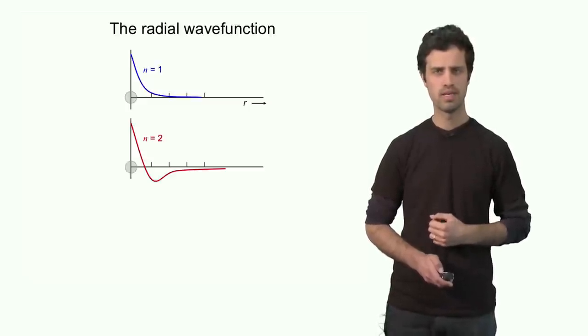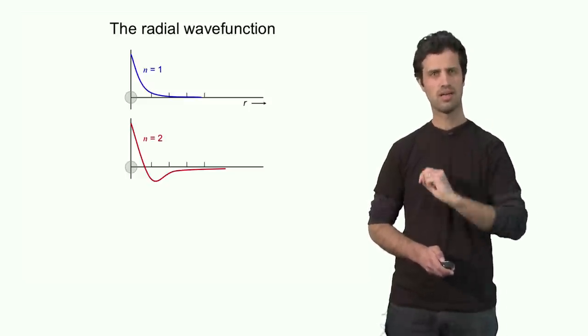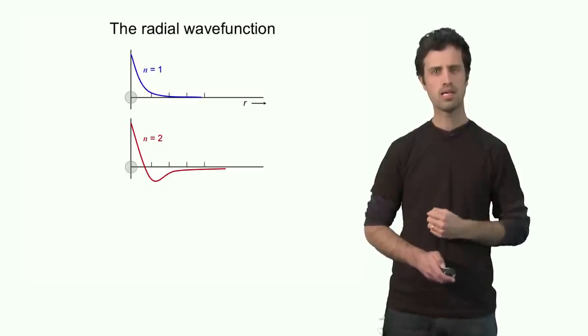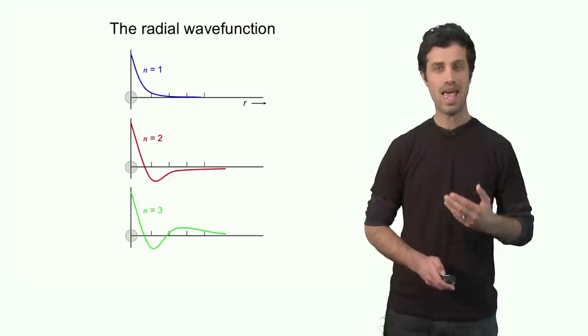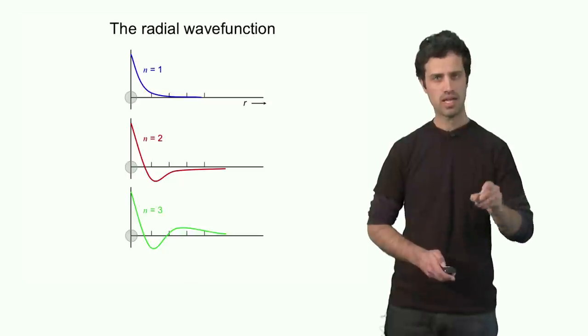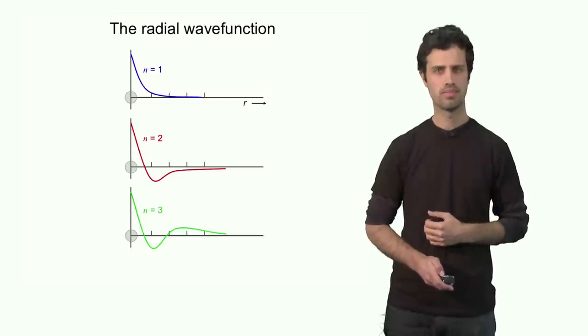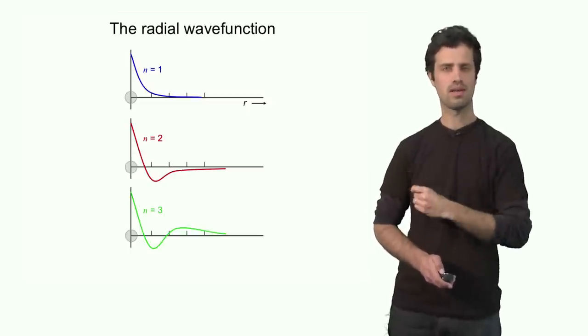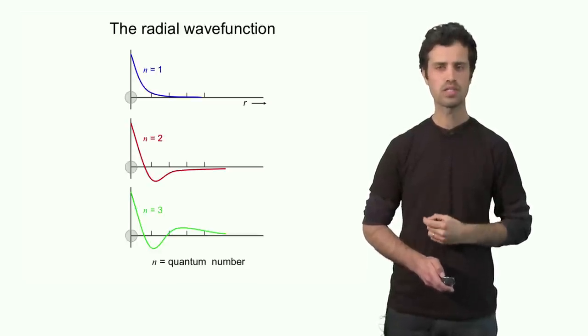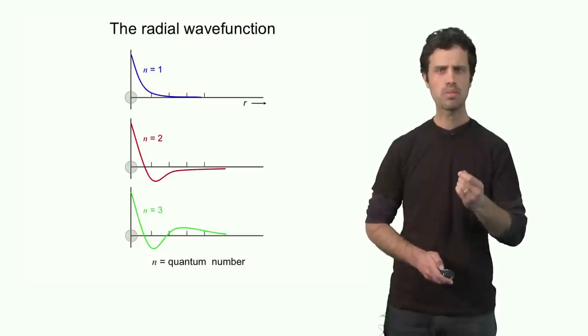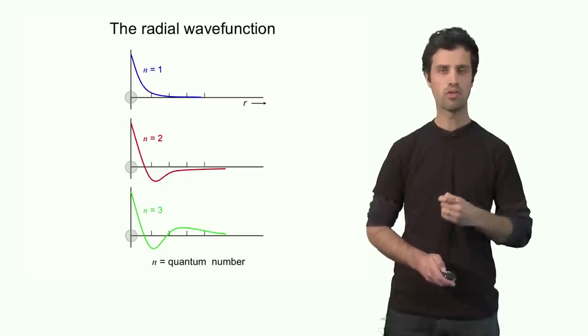This is an allowed solution. We call this n equals 1. The next allowed solution looks very similar. However, it has an extra swing, like the swing of a wave. This is n equals 2, the next allowed solution. Subsequently, n equals 3, very similar, yet it has an extra swing. And so forth, n equals 4, n equals 5, up to infinity. Again, we see this label n. n is very important. You call this n, this label n, the quantum number. The quantum number labels the allowed solutions of the electron function, the allowed solutions of the wave function.